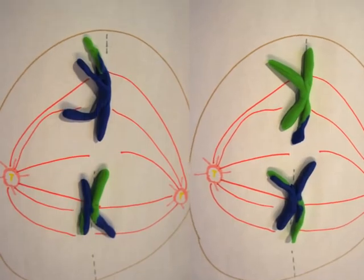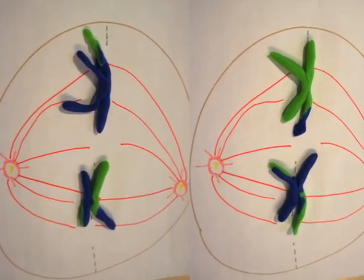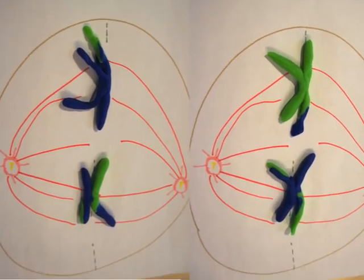Metaphase II is again where the chromosomes, in dyads, align along the metaphase plate, this time perpendicular to the previous cell's metaphase plate.